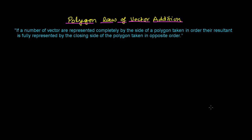After learning the triangle law of vector addition and the parallelogram law of vector addition, now let's talk about the polygon law of vector addition. The statement of the polygon law of vector addition states: if a number of vectors are represented completely by the sides of a polygon taken in order, their resultant is fully represented by the closing side of the polygon taken in opposite order.